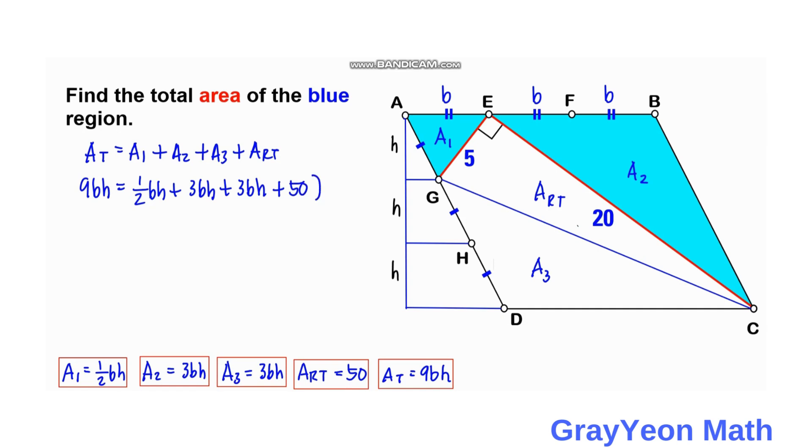And we can simply multiply this whole equation by 2. So we have 18bh equal to bh plus 6bh plus 6bh plus 100.